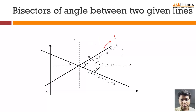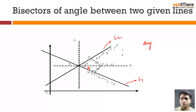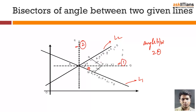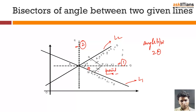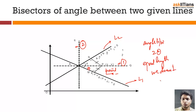Suppose these are two lines, L2 and L1. We have to find out the bisectors. Suppose this angle is theta and this is also theta, so the angle between the lines is 2 theta. We have a line bisecting these two lines — one bisector and another bisector. A key property of the bisector is that if you take any point on the bisector and draw two perpendiculars to the lines, you get equal length.